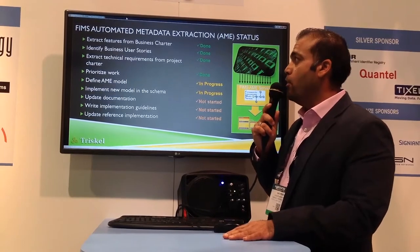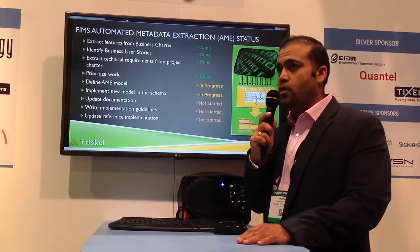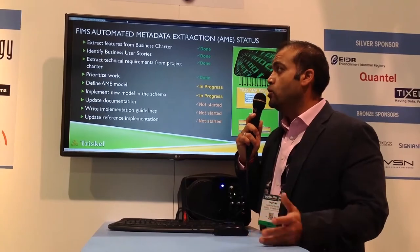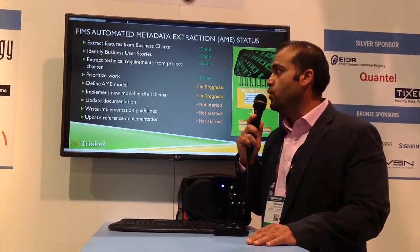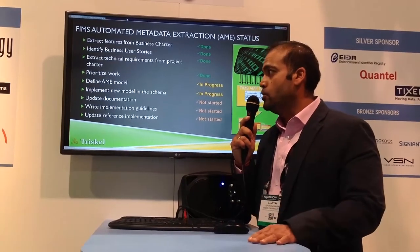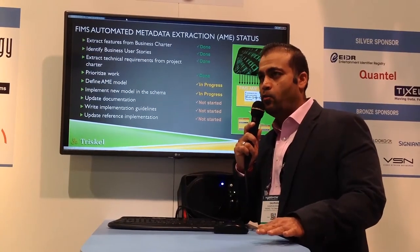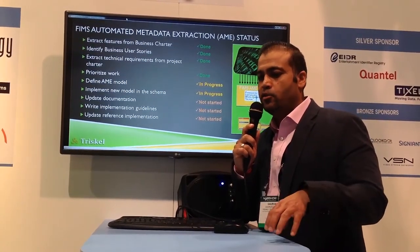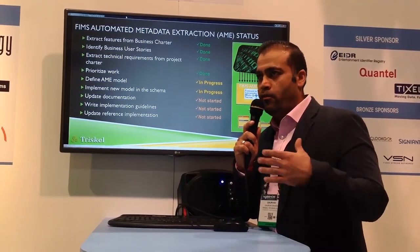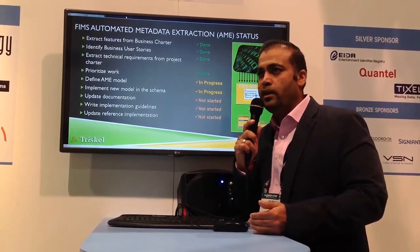Here's a quick glance at where we are. We've extracted from the business charter the set of features we wanted to implement as the first iteration for AME. We've also identified the business user stories and extracted technical requirements. We've prioritized the work. We're currently in progress of defining the AME model and implementing a new model and schema. There's harmony in terms of the work being done by the QA group and the time code group — we're just fortunate to leverage that work and build on top of it what we need, so we're not reinventing the wheel.